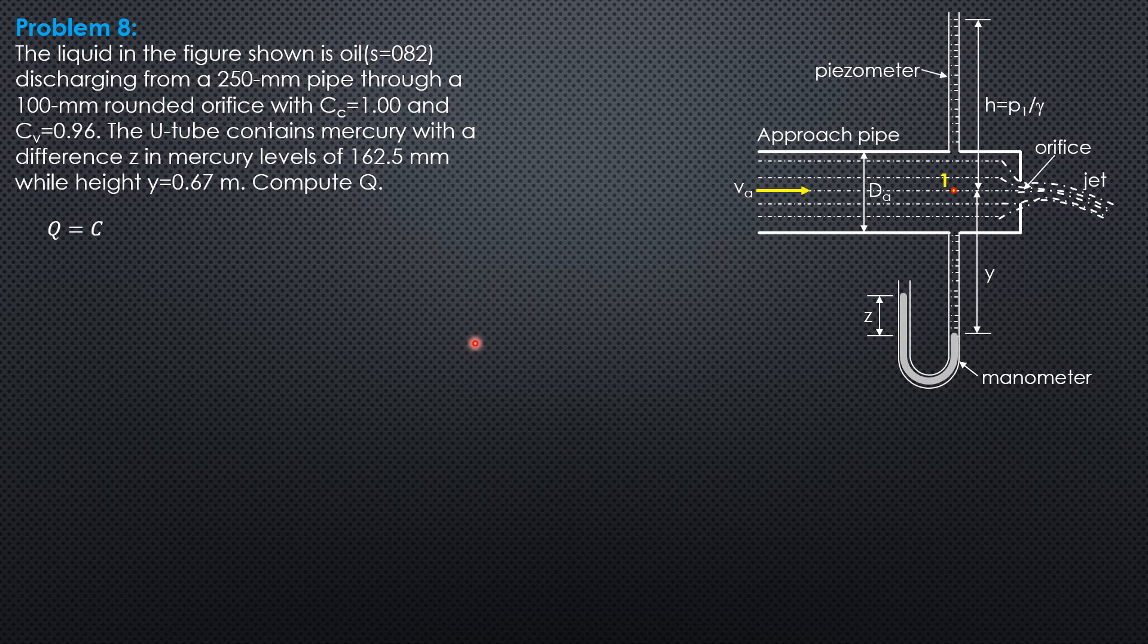Q equals C_c times C_v times A times square root of 2gh. Let's evaluate A_1 over A_o. Area 1 over area of orifice is π/4 times 250² over 100², that's 6.25, which is less than 16. Therefore, velocity head at point 1 is considerable.